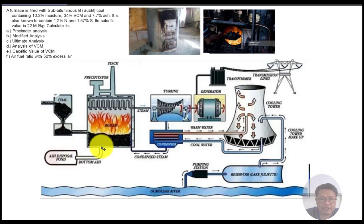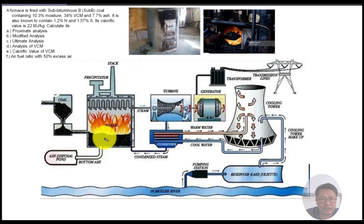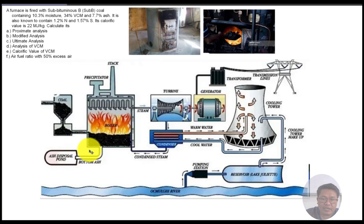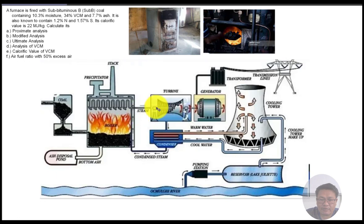Notice that the problem gives us 7.7 percent ash. After combustion, the remaining solid material is the ash. We can see bottom ash exiting and being conveyed to ash disposal. There is also a cooling tower, which is used for cooling the steam exiting the steam turbine.